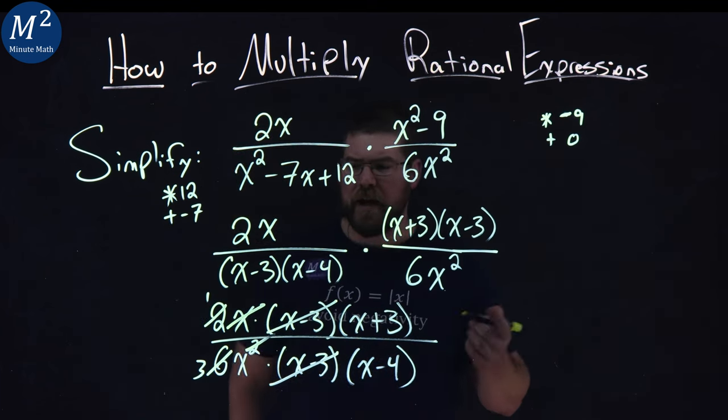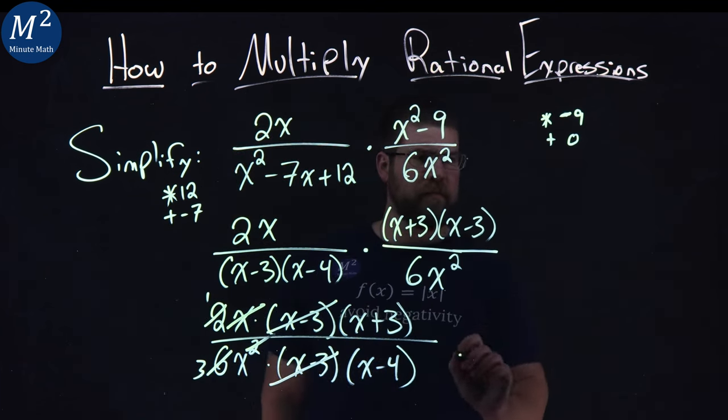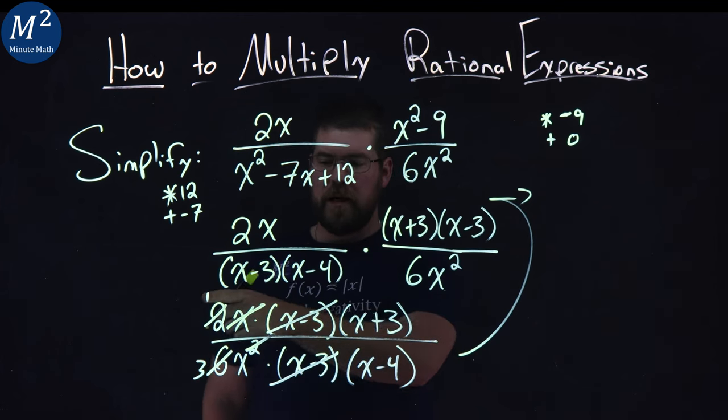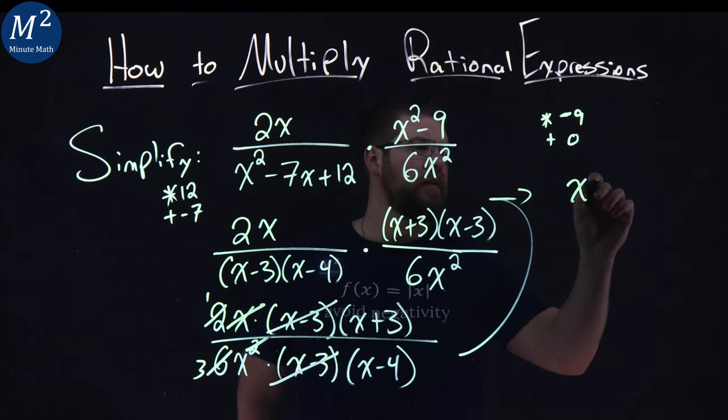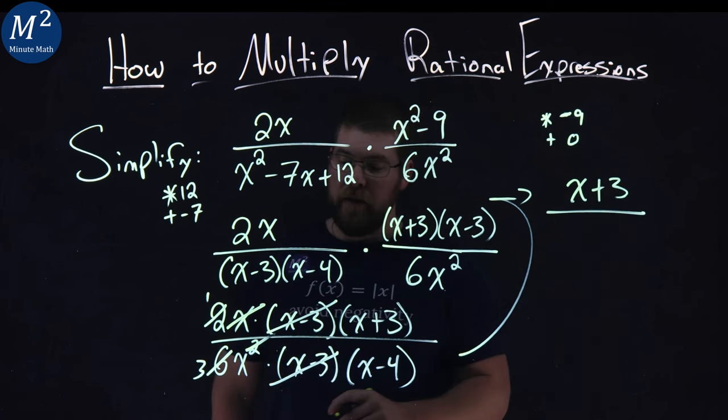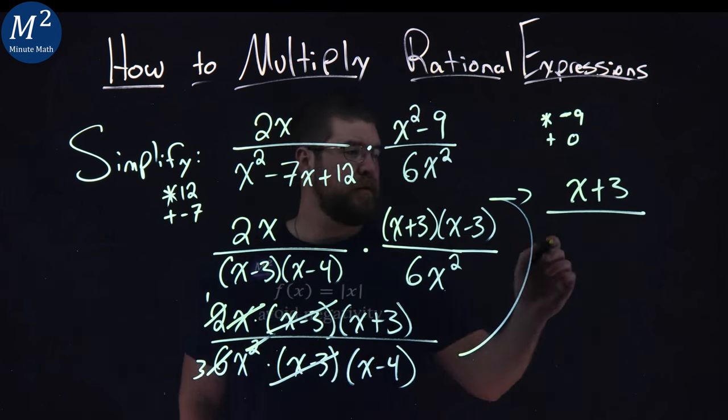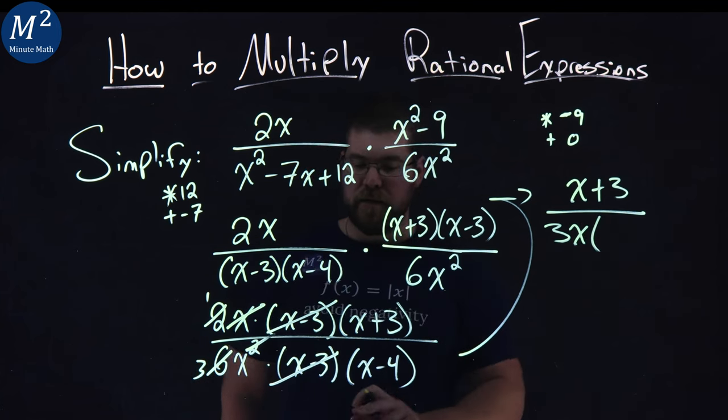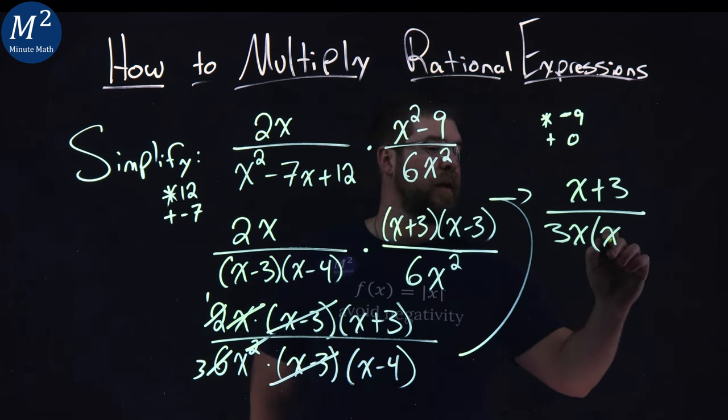After that, I don't really see anything else that I can cancel out, so what do we have left? Put it right here. Well, I have an x plus 3 times a 1, or just x plus 3, left in the numerator. And the denominator, I have a 3 here, an x left over, 3x, times an x minus 4.